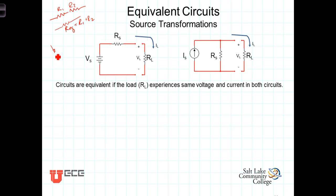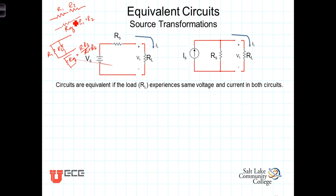Similarly, if we had two resistors R1 and R2 in parallel with each other, we could replace those with a single resistor Req that was equal to R1·R2 over R1 plus R2. The idea with equivalency is that those two devices can be replaced with a single equivalent device, and the rest of the circuit surrounding those two devices wouldn't be able to tell the difference — we don't affect the performance of the rest of the circuit by doing so.